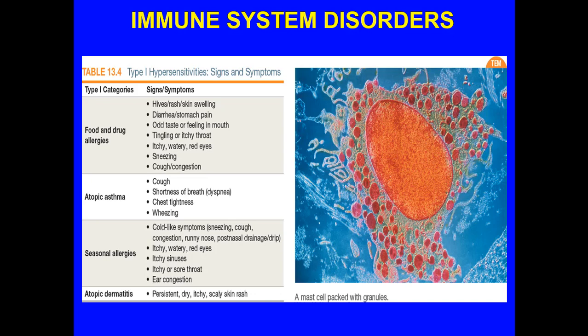With seasonal allergies — such as certain pollen like lilac and ragweed — you'll get cold-like symptoms: sneezing, cough, congestion, runny nose, post-nasal drip, itchy watery eyes, itchy sinuses, itchy or sore throat, and ear congestion. With atopic dermatitis, you get a persistent, dry, itchy, scaly skin rash that causes the epidermis to flake off and peel off much more quickly.